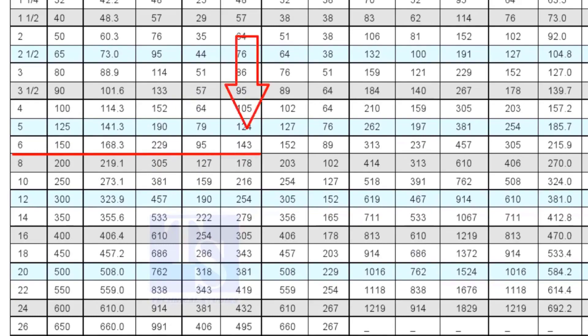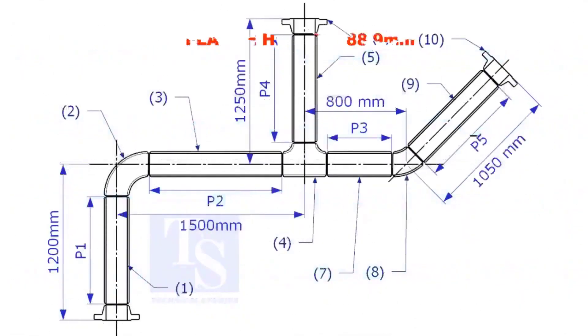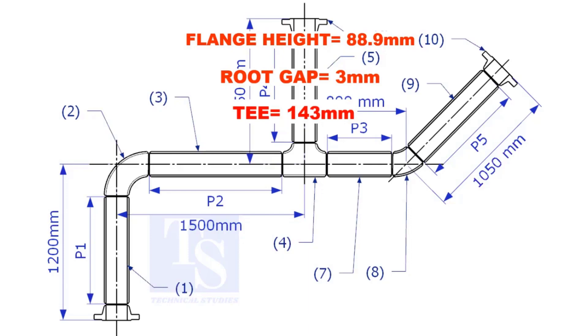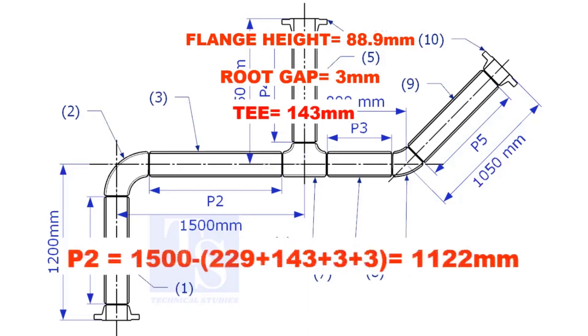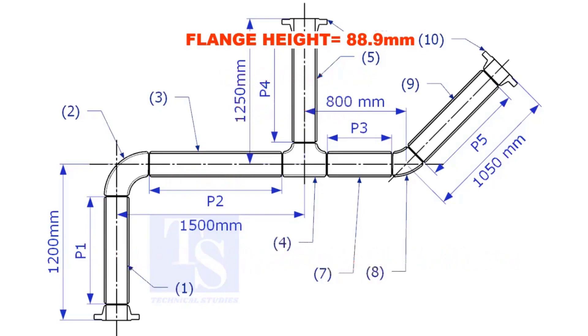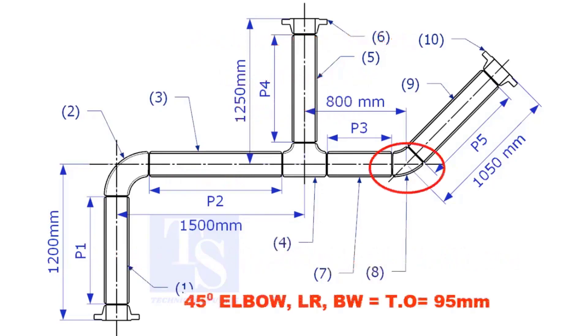It is 143mm. The length of item number 3 is 1122mm. Takeoff length of the 45 degree elbow is 95mm.